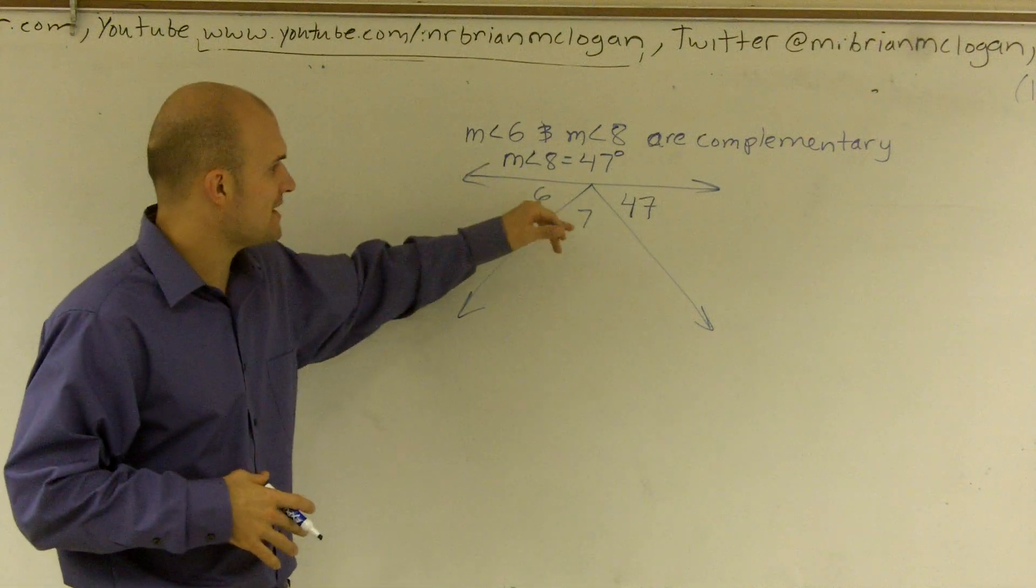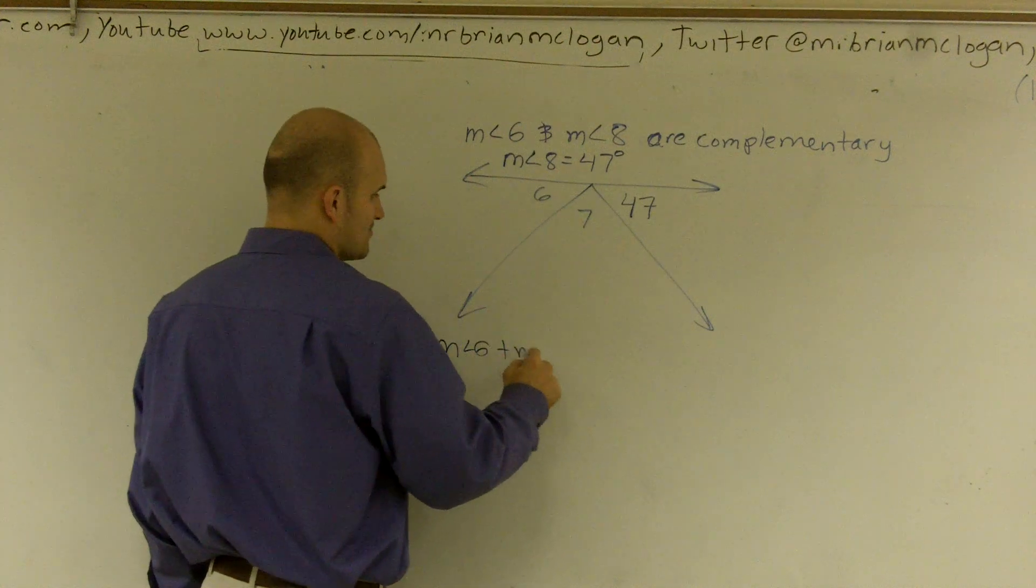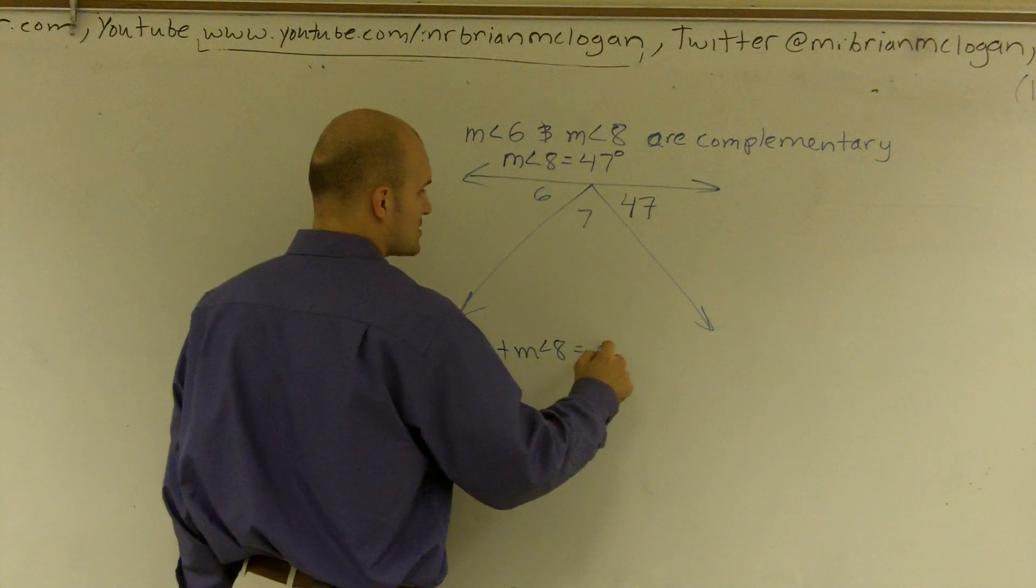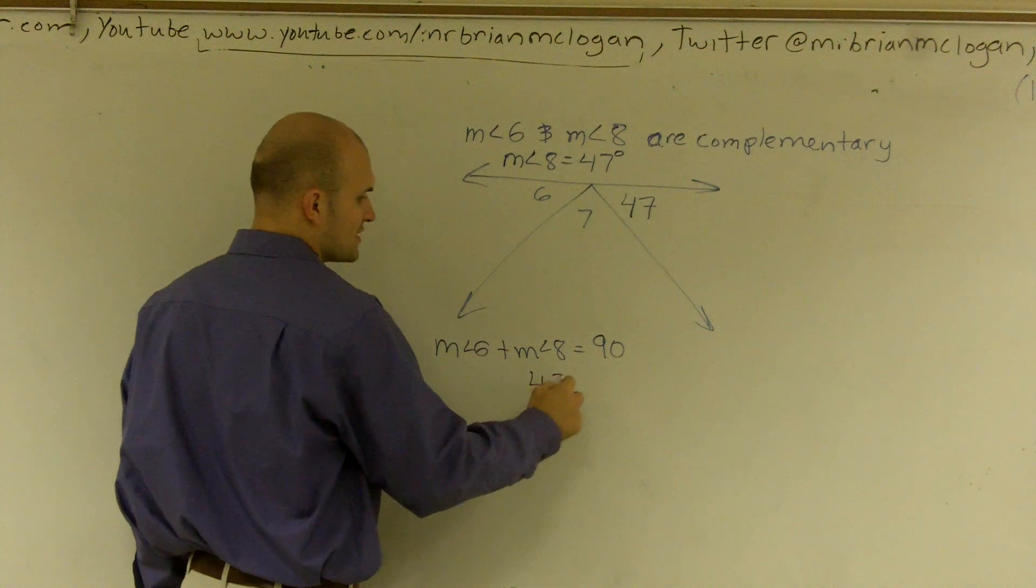So if I want to find the measure of angle 6, I can write an expression saying measure of angle 6 plus measure of angle 8 equals 90 degrees. Well, I just told you measure of angle 8 is 47 degrees,